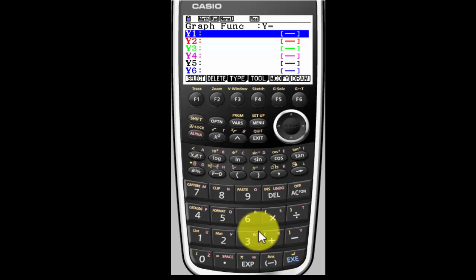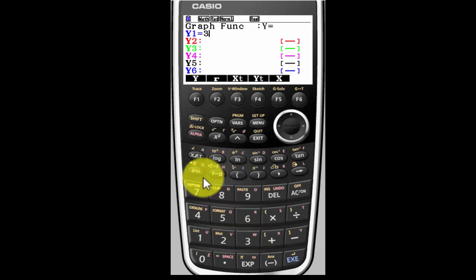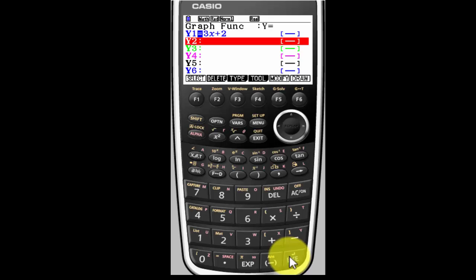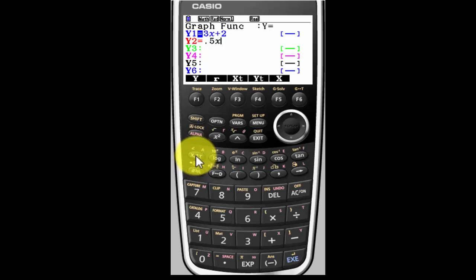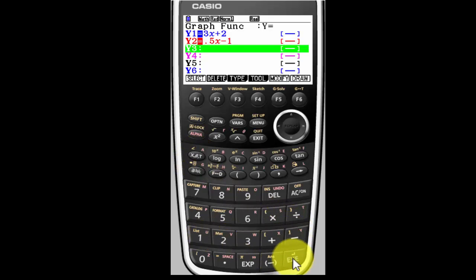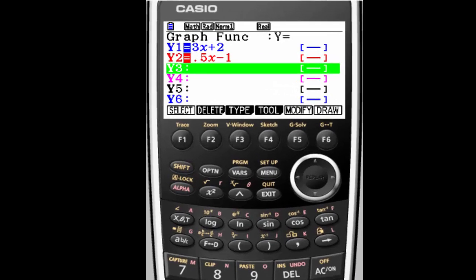And I'm going to put in my functions. I'm going to say 3x plus 2 is one function. I'm going to hit Execute to say I'm done with that function. And the other is .5x minus 1 and Execute. And there's my two functions. I want to know where they are going to intersect.